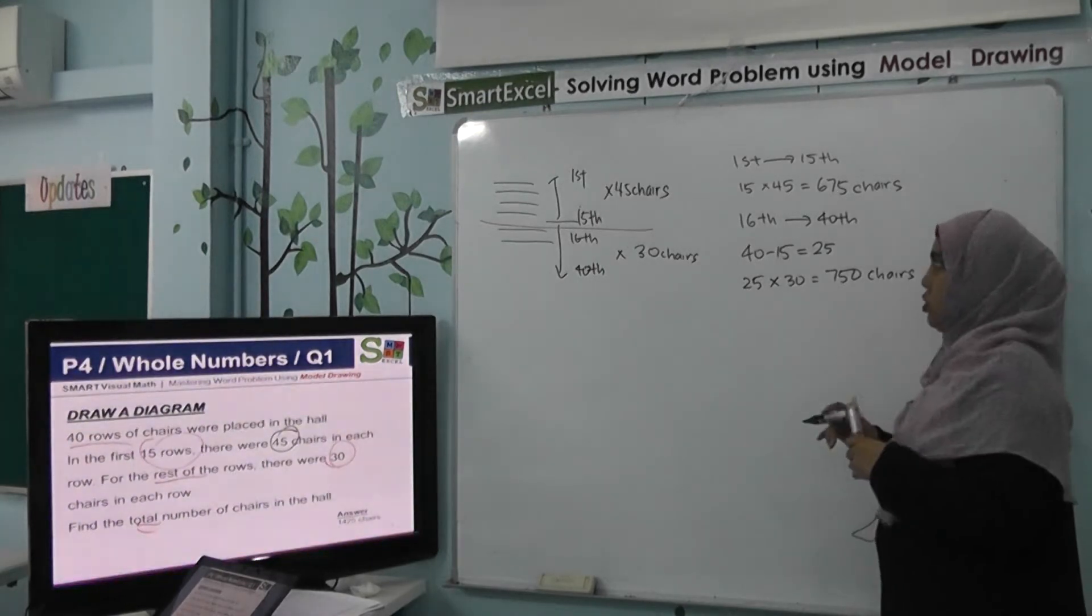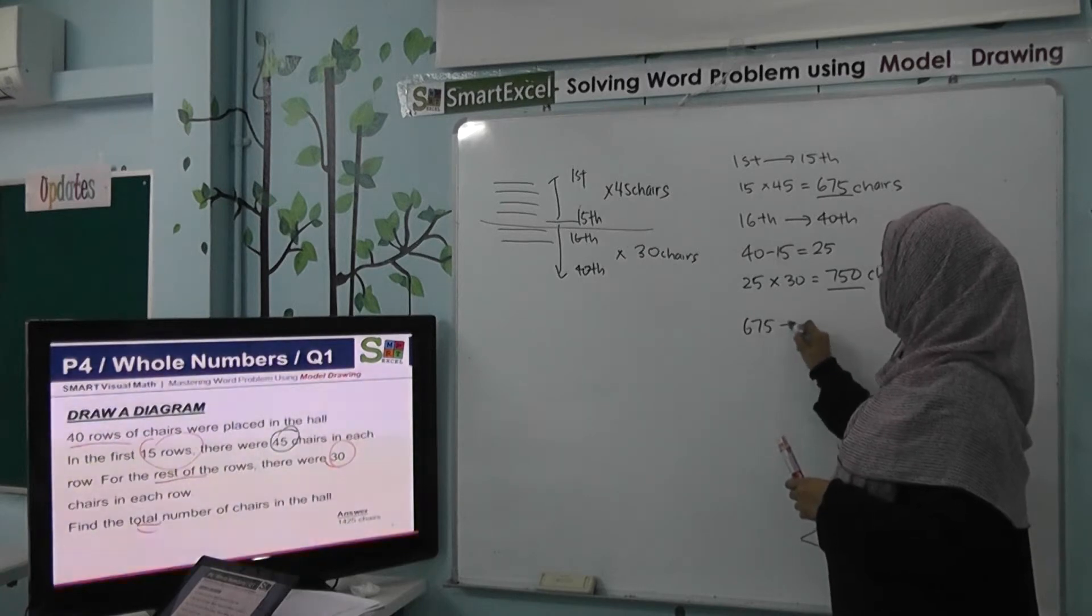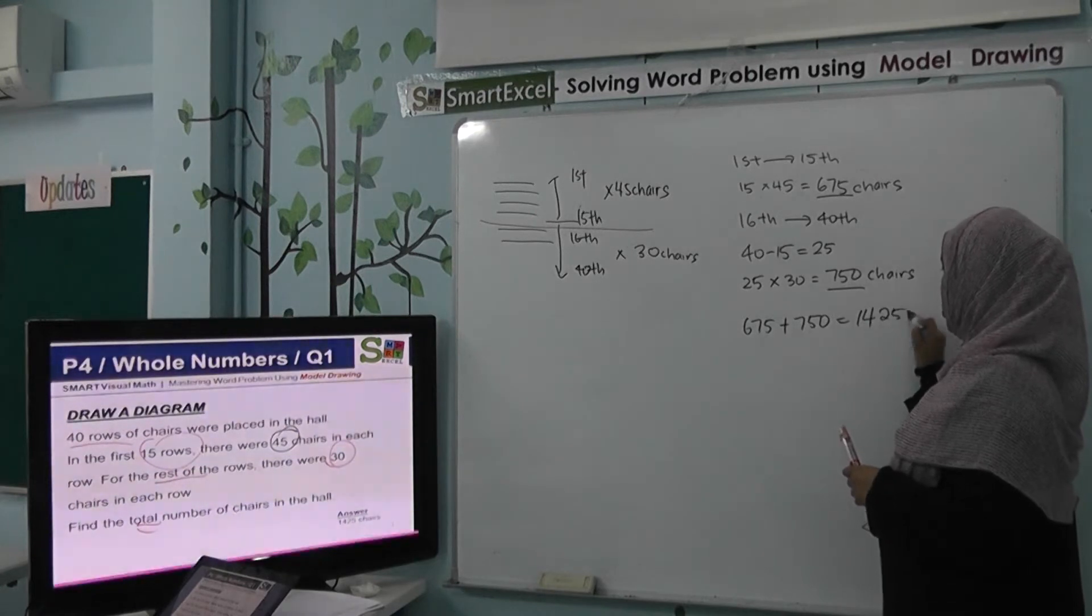Then, to know all the rows together, we will combine this and this together, will be 675 plus 750, which will give you 1425.